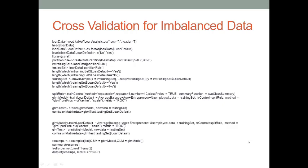For example, we could have over 10,000 data records in the dataset, but only a few customers — like 10 or 20 — didn't pay back mortgage on time. 10 over 10,000 is a very small percentage. If we have a dataset like that, then we call it an imbalanced dataset.